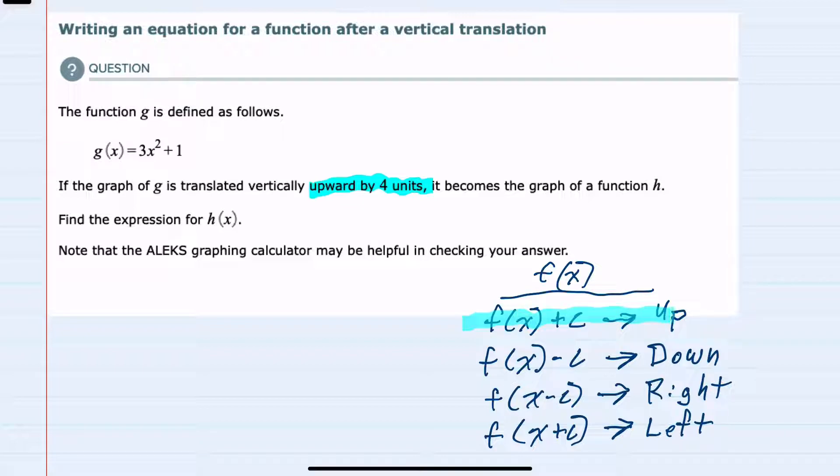To translate up, we add that many units to the original function. So here, h(x) is going to be g(x) plus 4 units, which will translate it up 4 units.